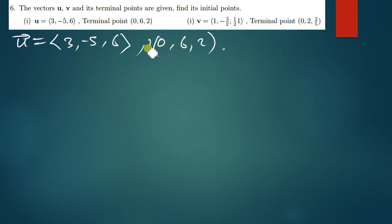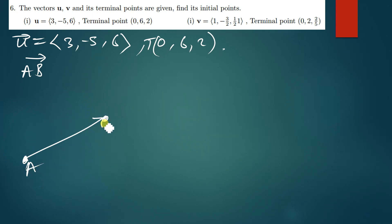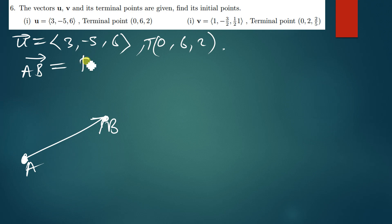Remember what I told you in the previous videos on vectors — you can check the playlist for vectors. When finding vector AB, you simply subtract the initial point from the terminal point. You can say head minus tail, so that's B minus A.